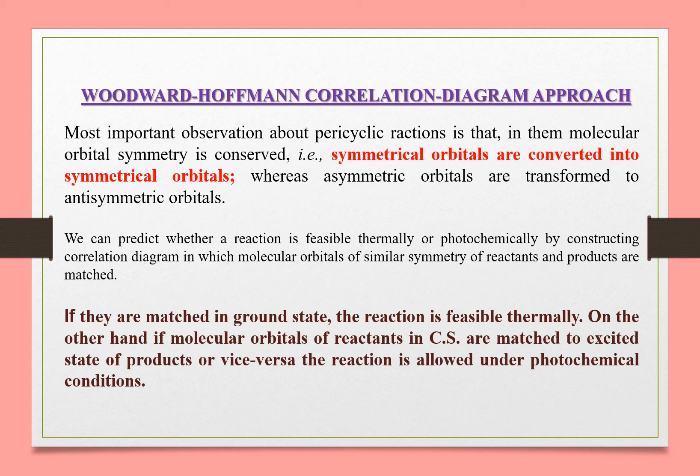We can predict whether a reaction is feasible thermally or photochemically by constructing a correlation diagram in which molecular orbitals of similar symmetry of reactants and products are matched. We have the molecular orbitals of the reactant and of the product, and symmetric orbitals are correlated.